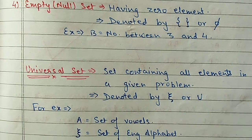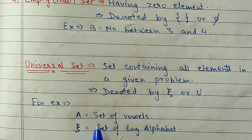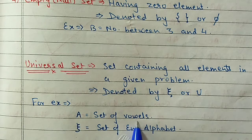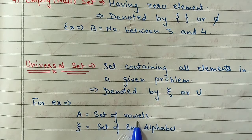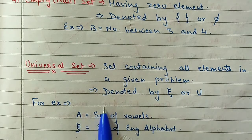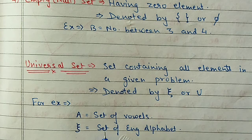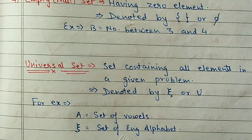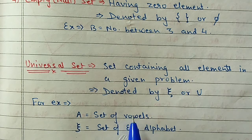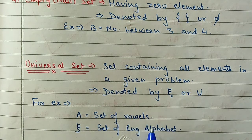For example, if I have a set A of vowels, then the universal set of vowels will be the English alphabet set. And for consonants also, the set of English alphabets will be the universal set - universal set for vowels and universal set for consonants.